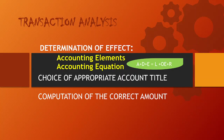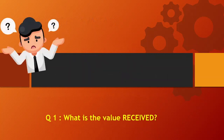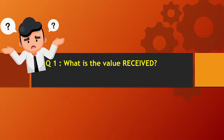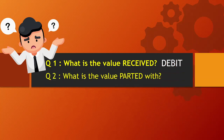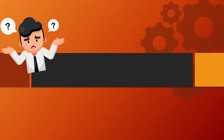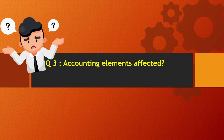This leads accountants to mentally answer the following questions. First, what is the value received? This would be our debit. Next, what is the value parted with? This corresponds to our credit. And third, what accounting elements are affected?